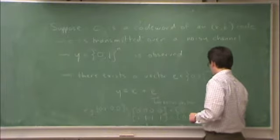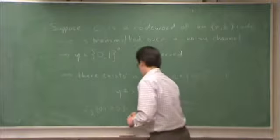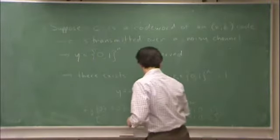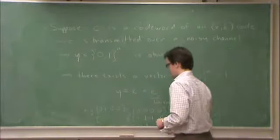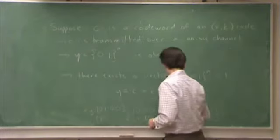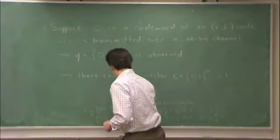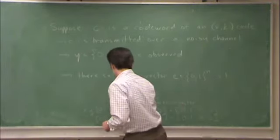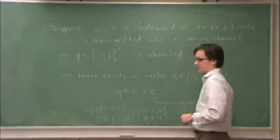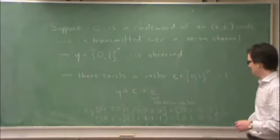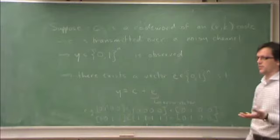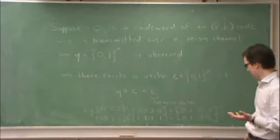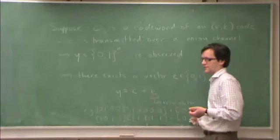We have the same error pattern. Mod 2, we get 1 plus 0 is 1, 1 plus 1 is 0, 1 plus 0 is 1, 1 plus 0 is 1. So in other words, the error pattern, the error sequence e gives us an idea of which bits were flipped. So this is the distortion that the channel introduces.